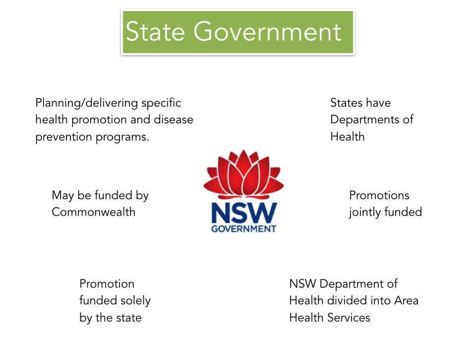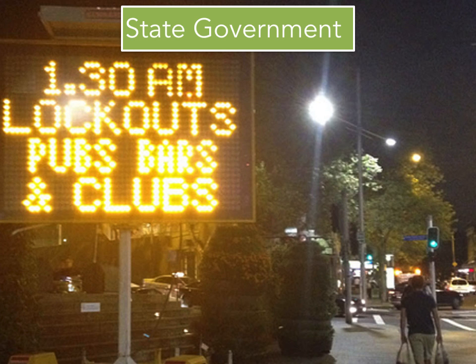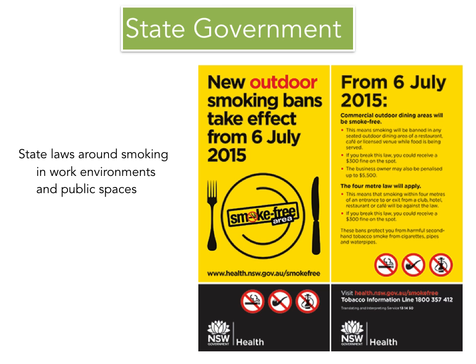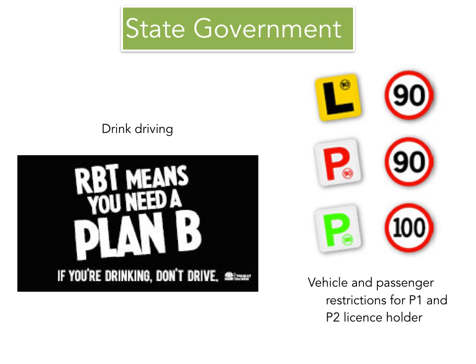Each state government works in close consultation with the commonwealth, receiving funding to promote issues specific to the needs of people in the state. Each state government has its own health department, separated into area health services focusing on specific communities. For example, the NSW state government has focused on lockout laws in pubs and bars to reduce alcohol-fuelled violence, and also regulates laws around smoking in work environments and public places.